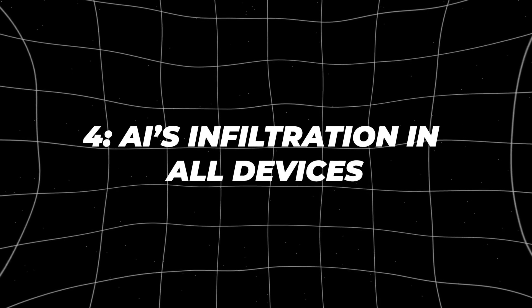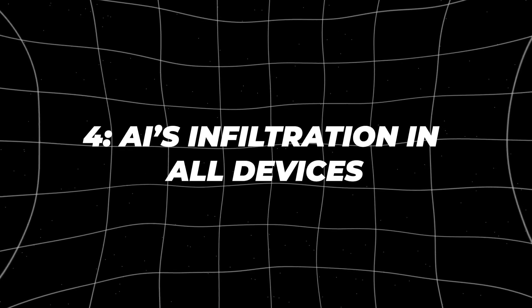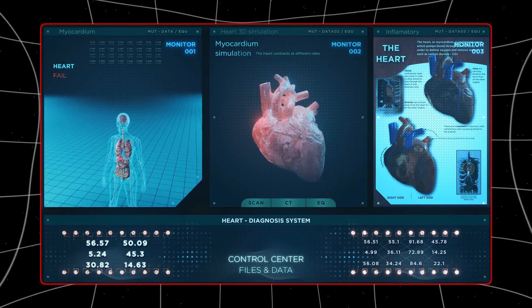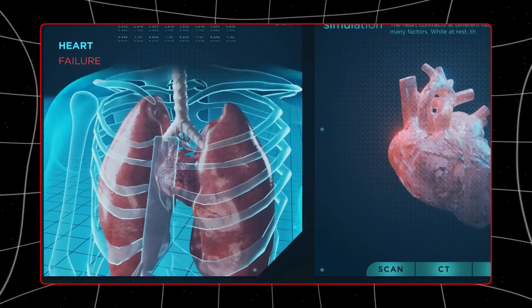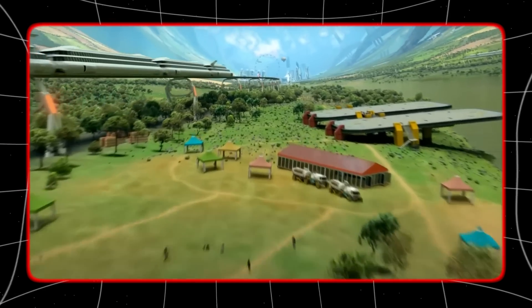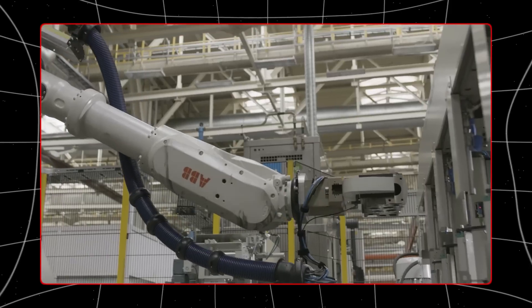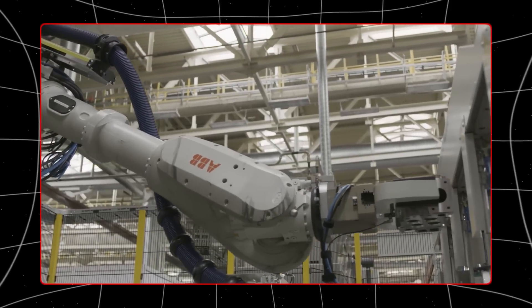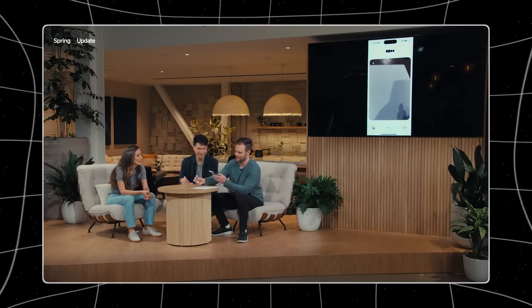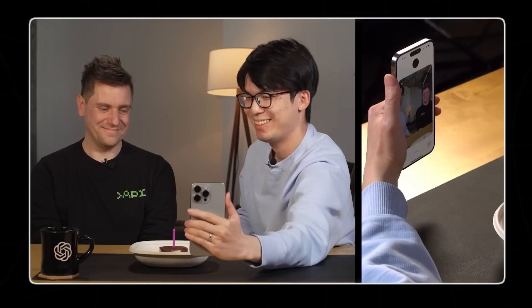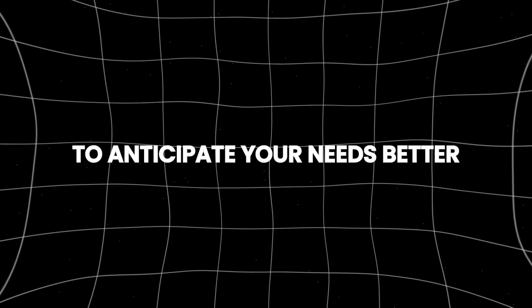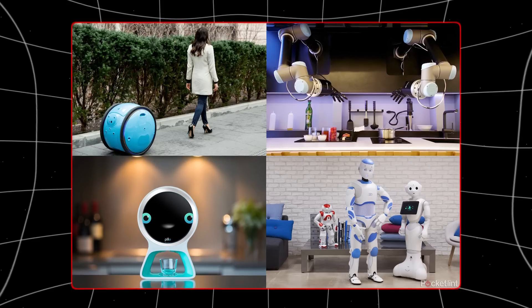Number four, AI's infiltration in all devices. By 2030, we can expect a widespread adoption of AI across various everyday devices. This means that your home appliances, wearable technology, and even robots and drones will become smarter. They will be designed to recognize faces, respond to spoken commands in a more human-like way, and learn from your habits to anticipate your needs better.